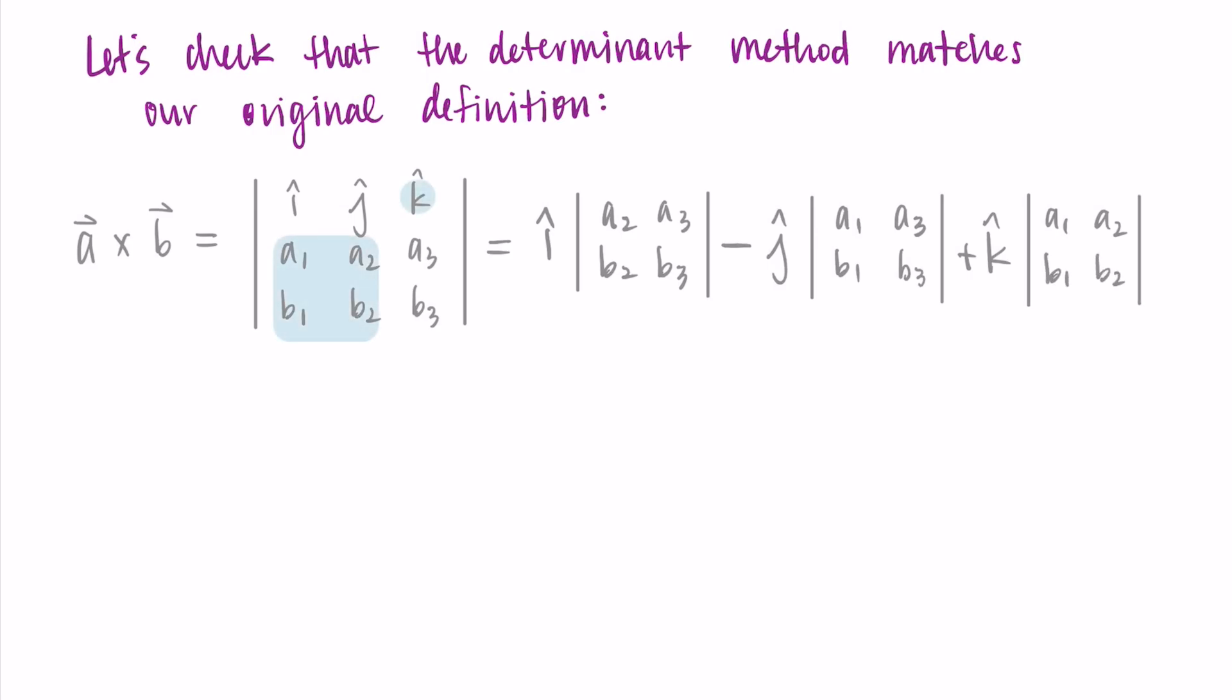Now I'm just computing a bunch of these two-dimensional determinants. So for the I part, I do the diagonals subtracted: A₂B₃ minus A₃B₂. This might start looking familiar to our original formula. Then I subtract J times the determinant, which is again the diagonals: A₁B₃ minus A₃B₁. Then I add it to K times this final determinant: A₁B₂ minus A₂B₁.